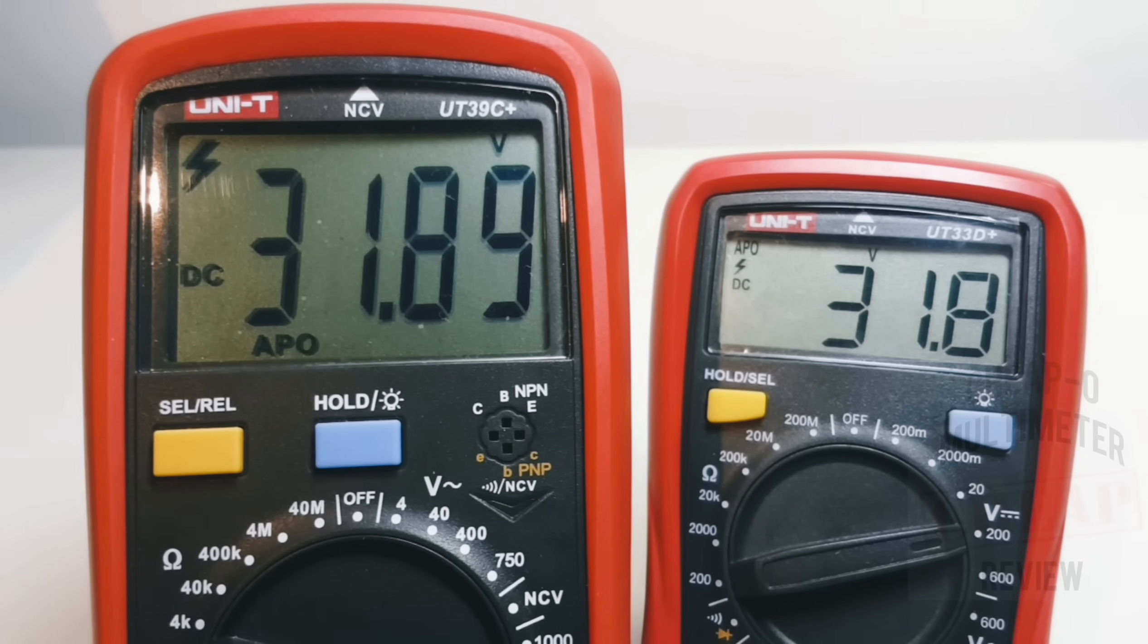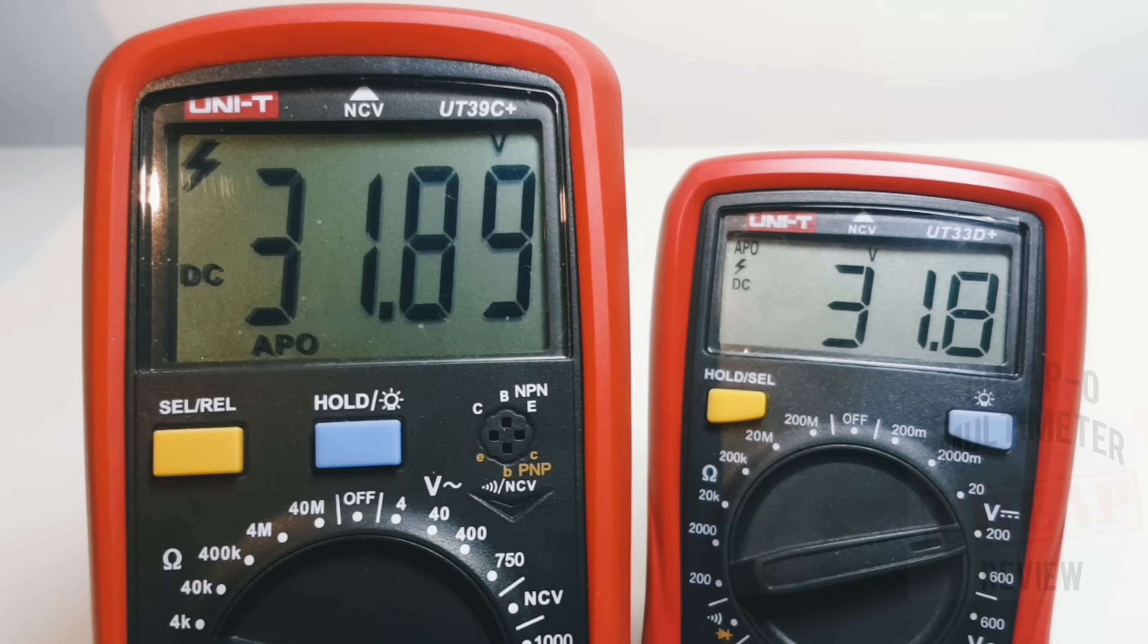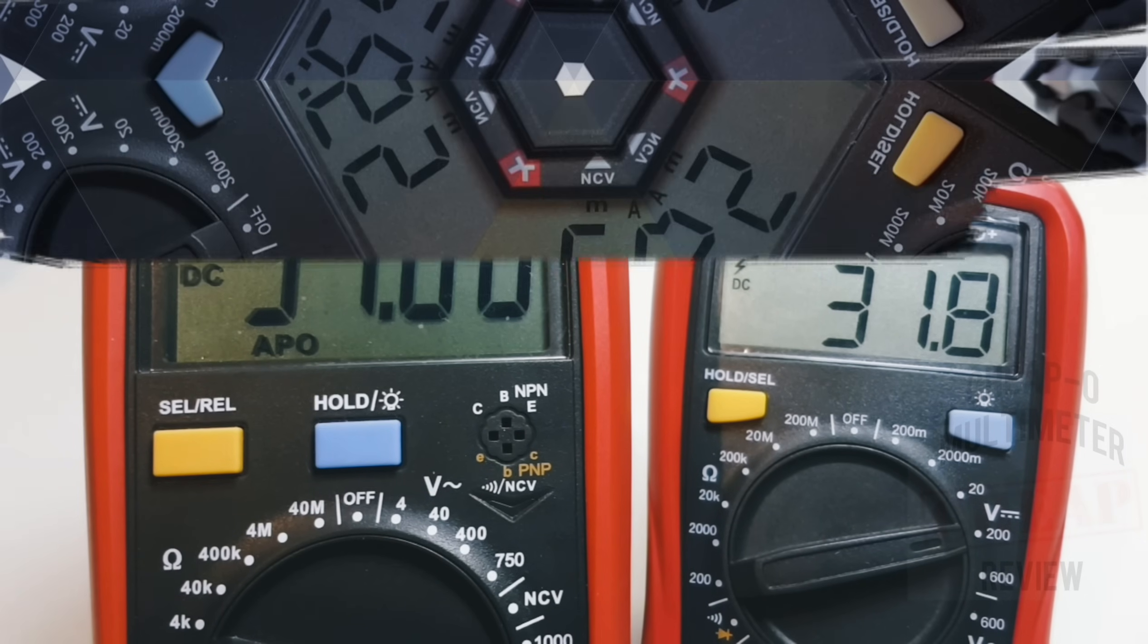31.8 slightly lower resolution but spot on still for the 33D+. So good job, awesome. And I must say that little UNI-T is pretty darn accurate. I love the fact that they both have that high voltage readout. Definitely a lot more verbose on the 39C+, but still nonetheless it is there on the 33D+. Good stuff.